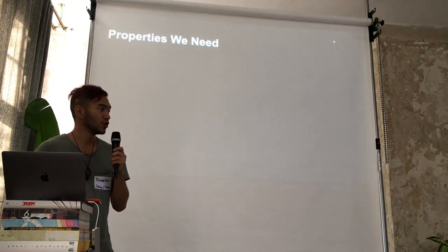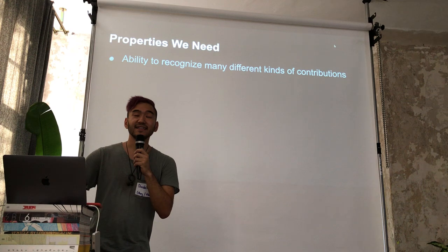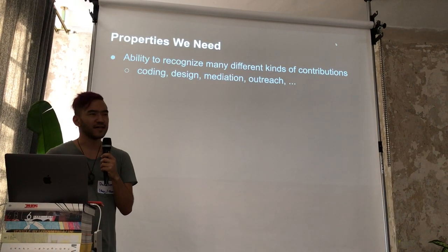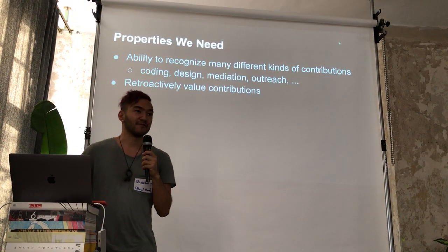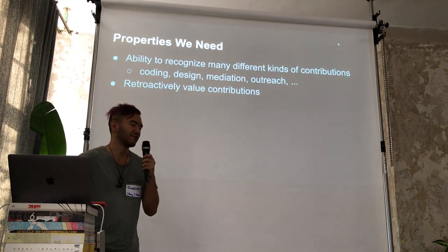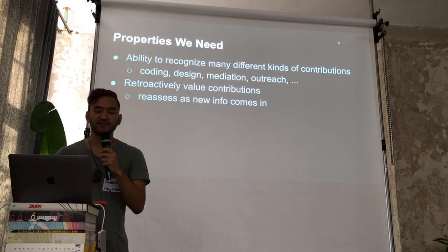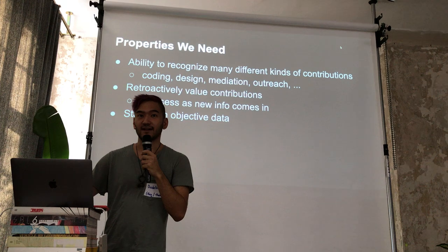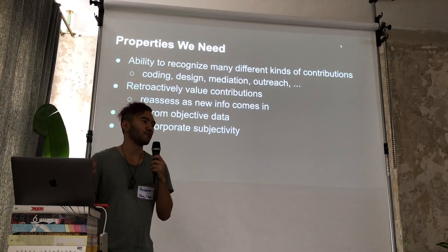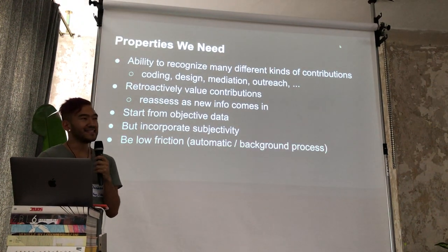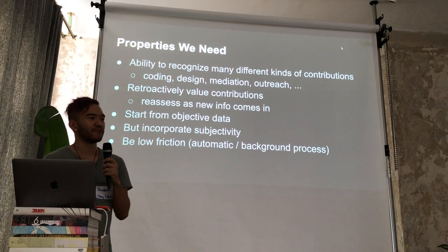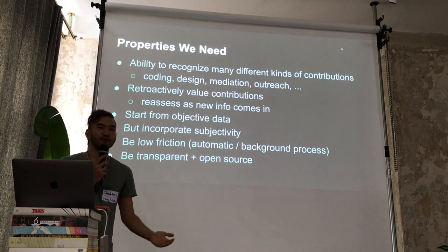So what do we need from a system that distributes money to open source projects? It needs to recognize many different kinds of contributions — coding, design, mediation, outreach, reviewing. It needs to work retroactively, because you can't tell upfront whether something will be an incredibly important feature or a flash in the pan. It needs to start from objective data so it's not just a popularity contest, but also let in subjectivity — you need humans in the loop. It needs to be low friction and transparent and open source, otherwise it will have no legitimacy.